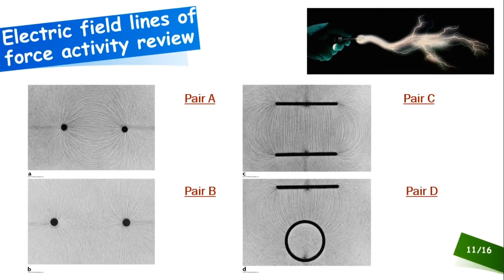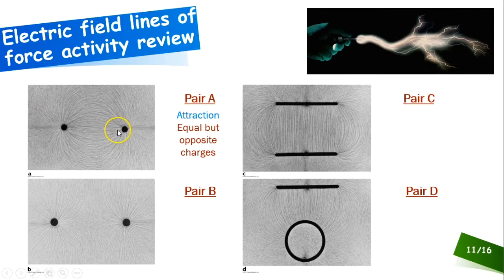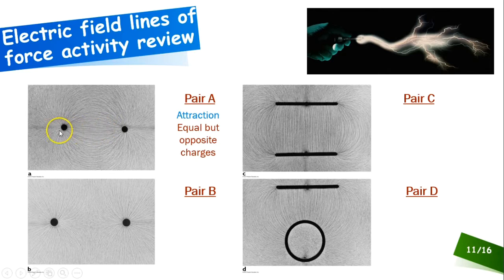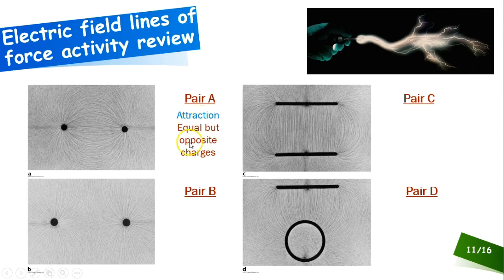Looking at pair A: the lines of force connect the two conductors together, indicating attraction — equal but opposite charges. We know the charges are equal because if you draw a center line, you see a mirror image on each side — a symmetric pattern. The symmetry tells us equal charges; the connecting lines tell us opposite charges attracting.